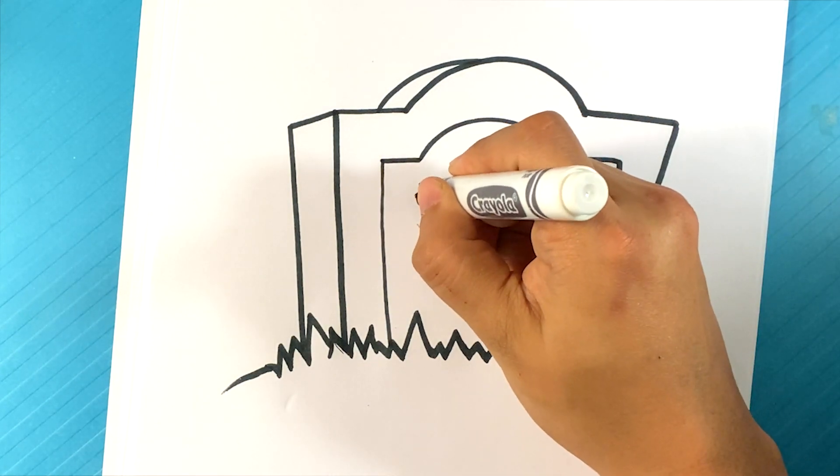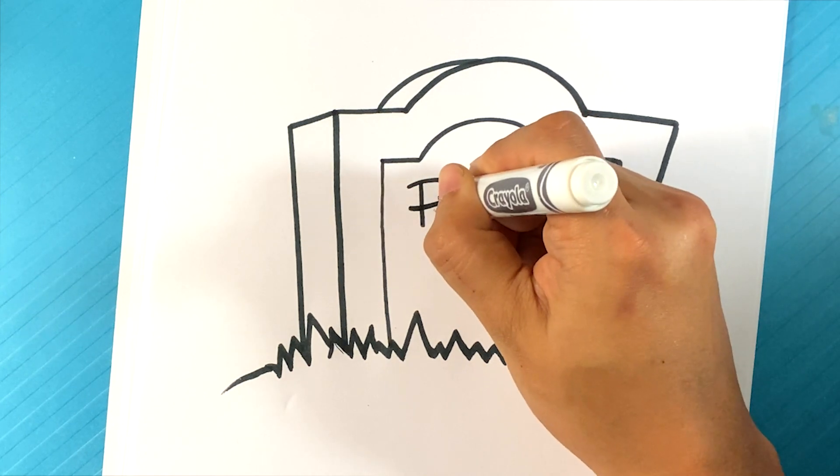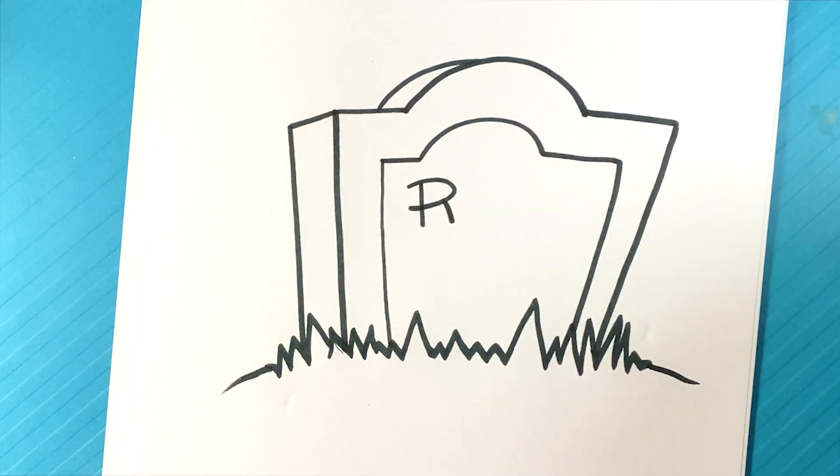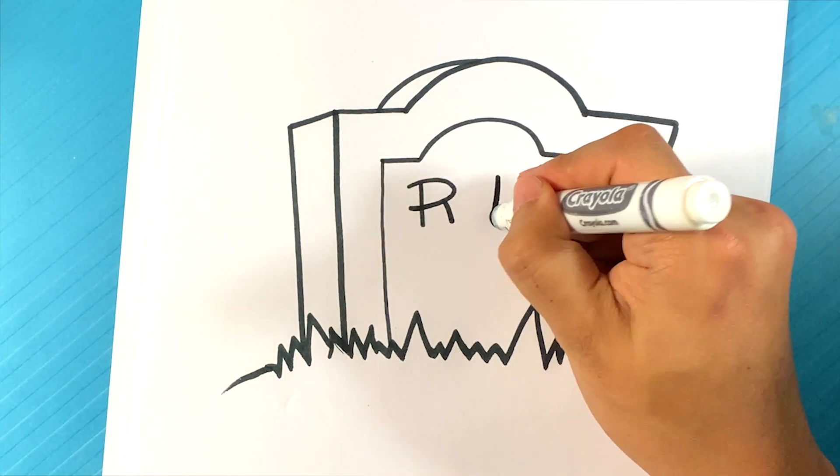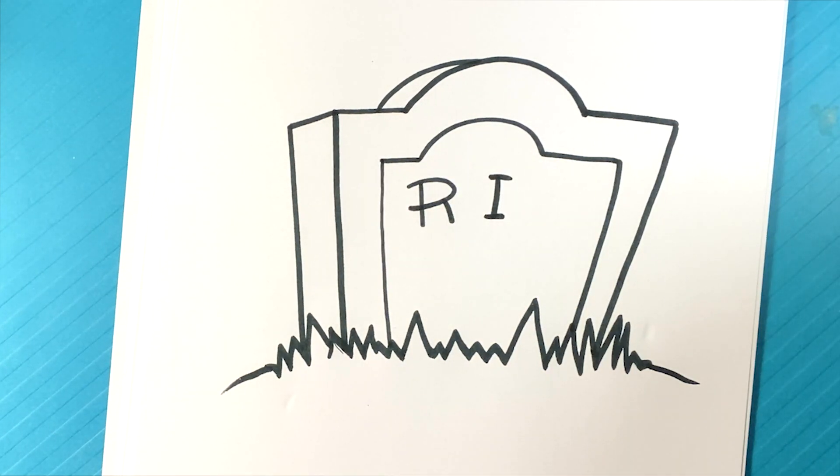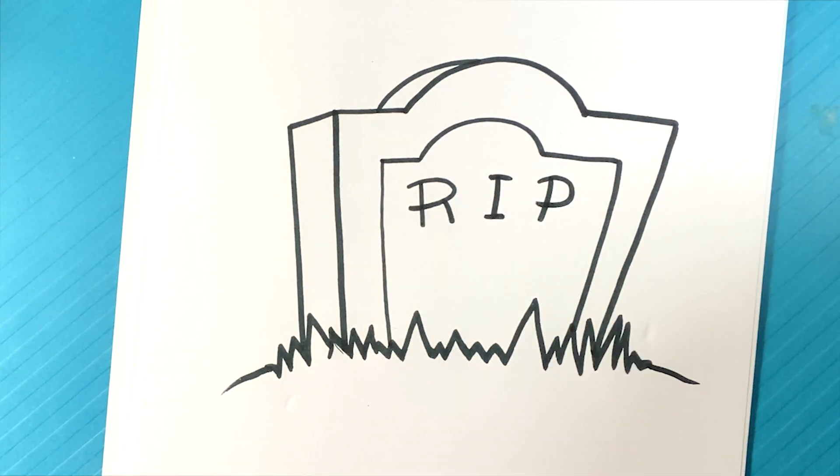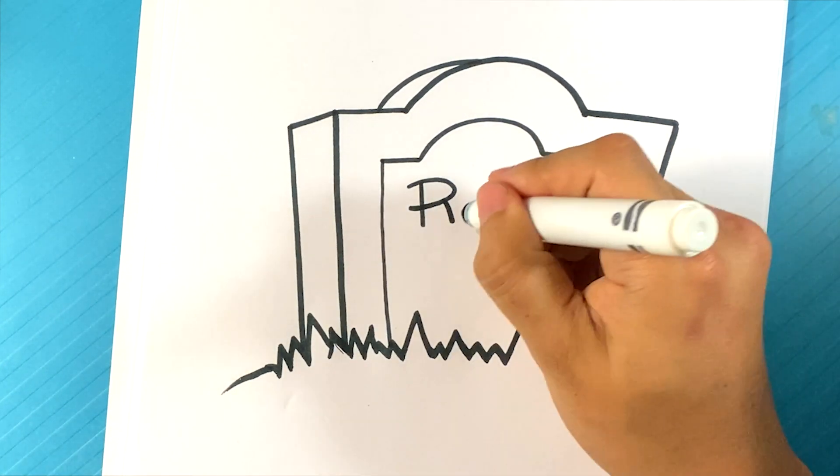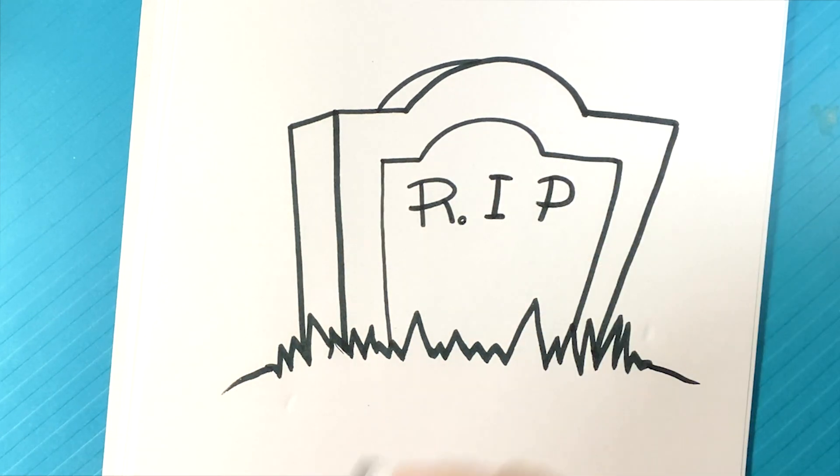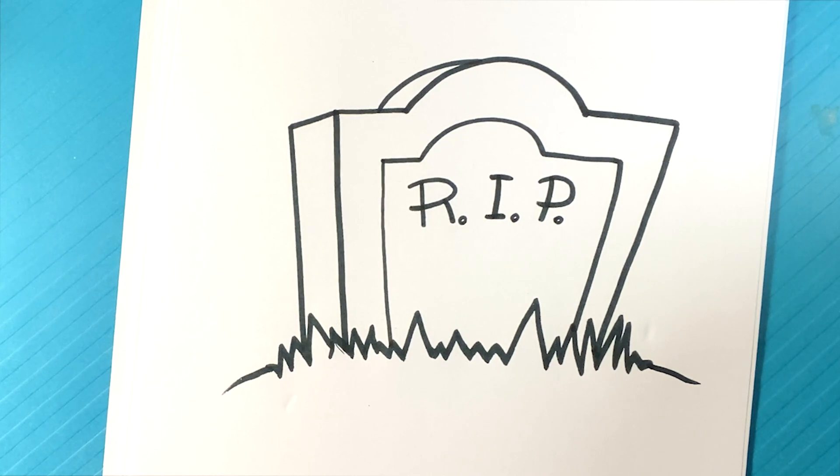Going over here. R. What would we do? RIP. I. P. Dot. And dot. And dot. All right. Rest in peace.